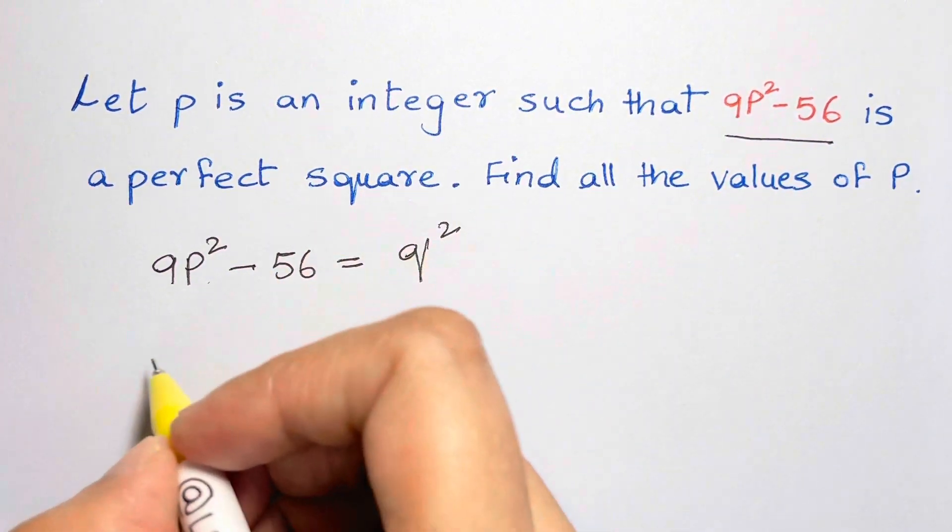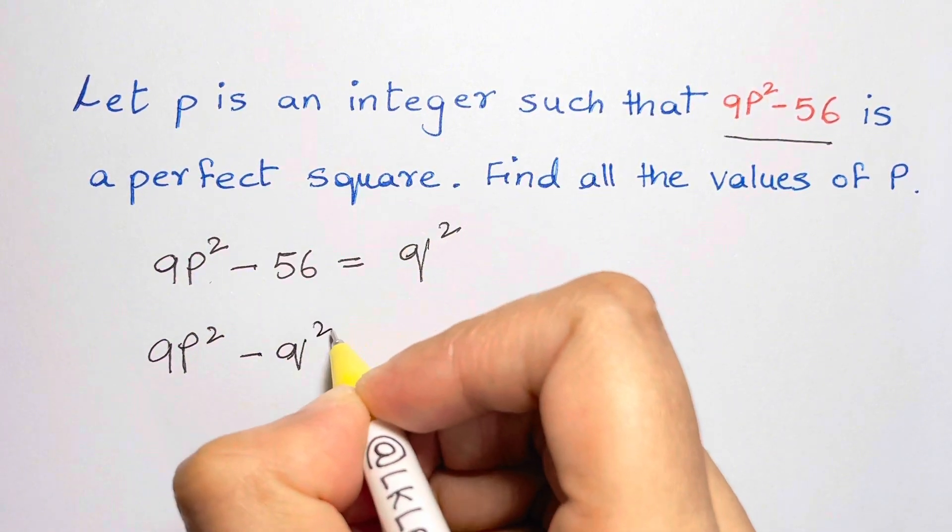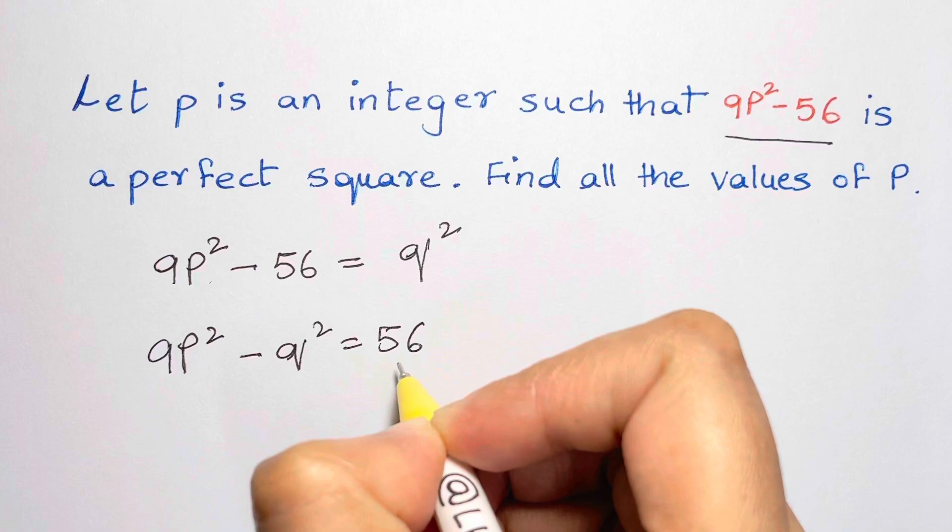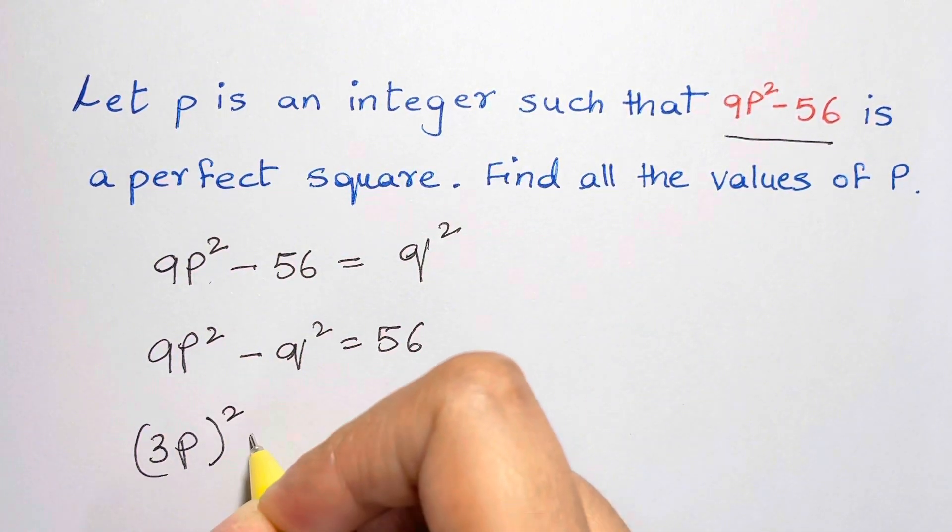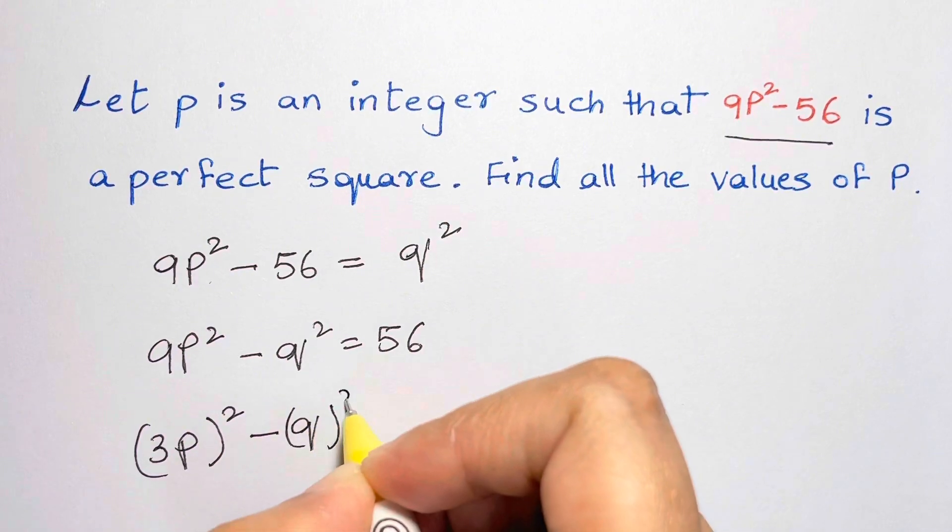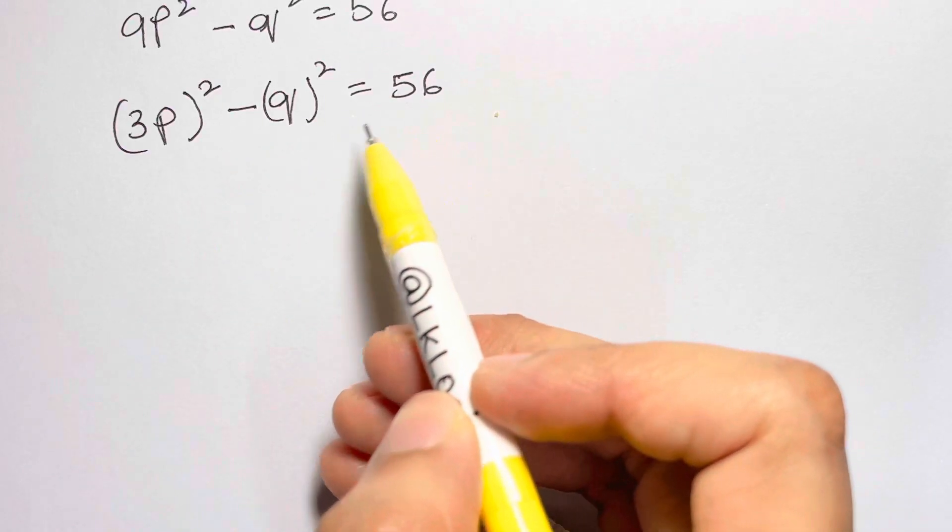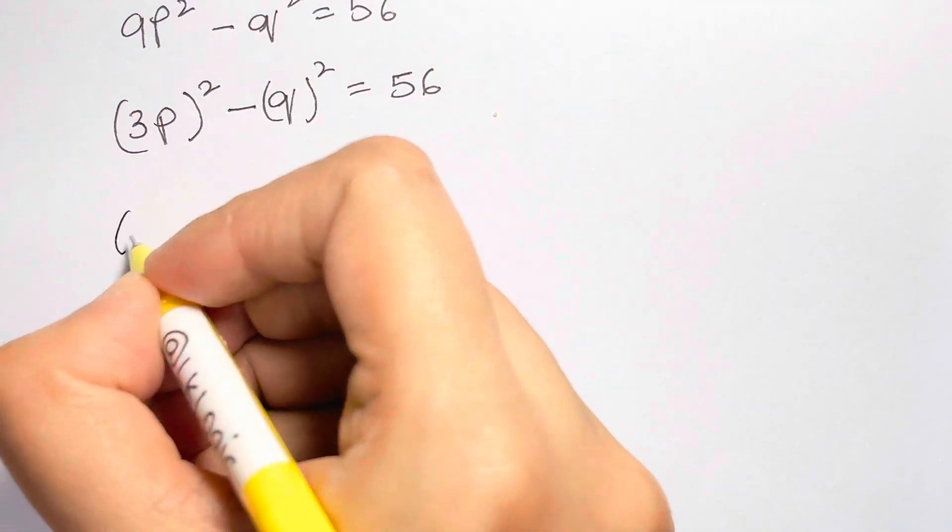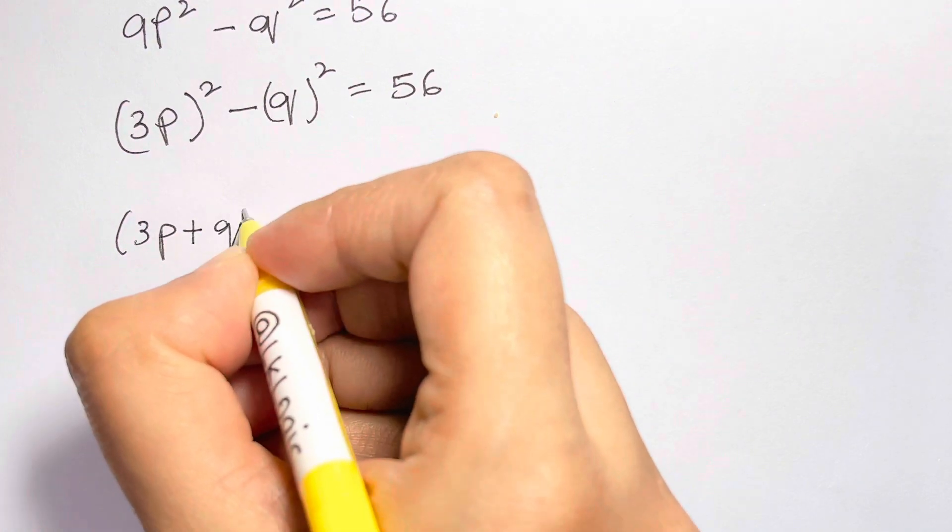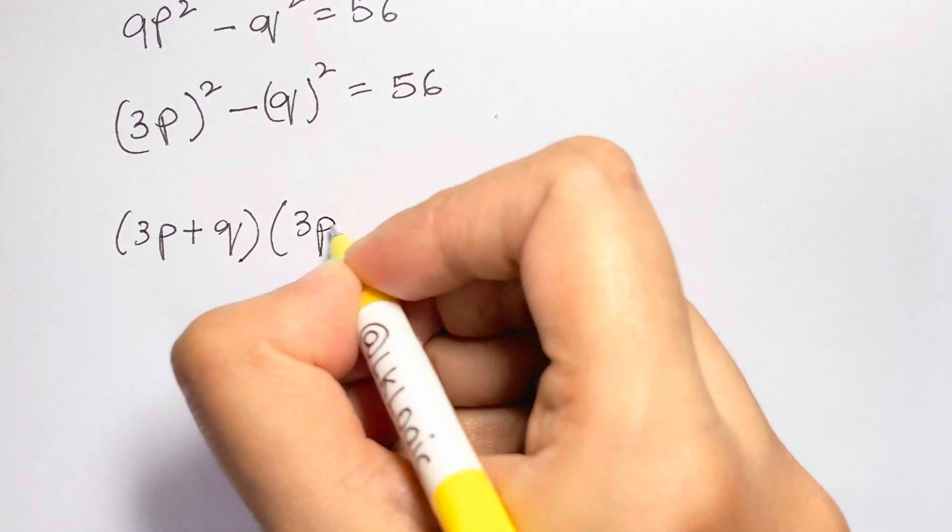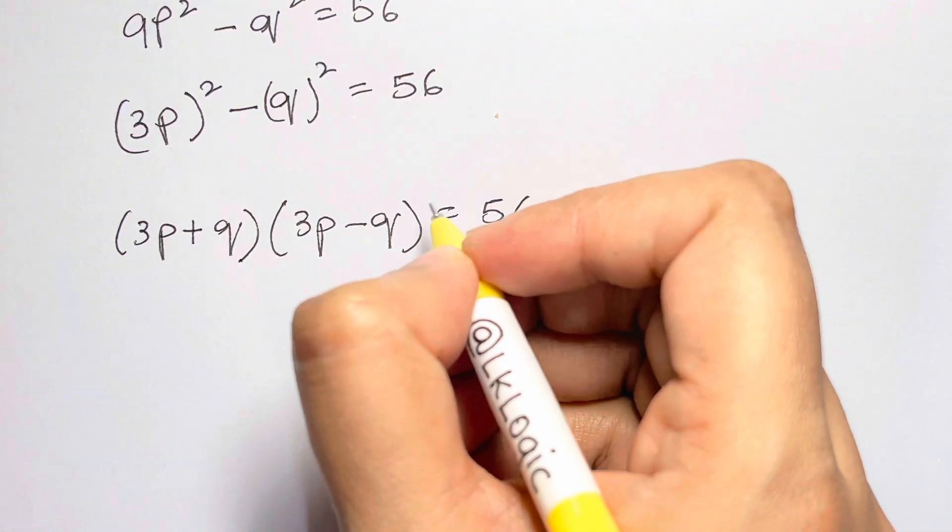So here we have, let's rearrange: 9p² - q² = 56. This can be written as (3p)² - q² = 56. Now if you see there is a difference of squares, so let's write that as (3p + q)(3p - q) = 56.